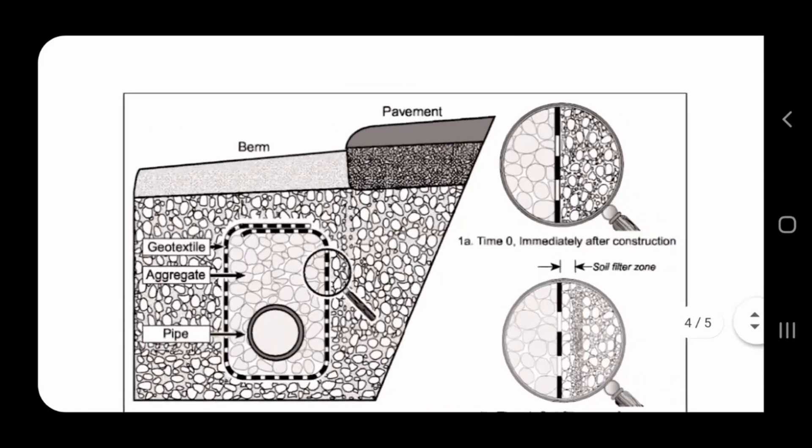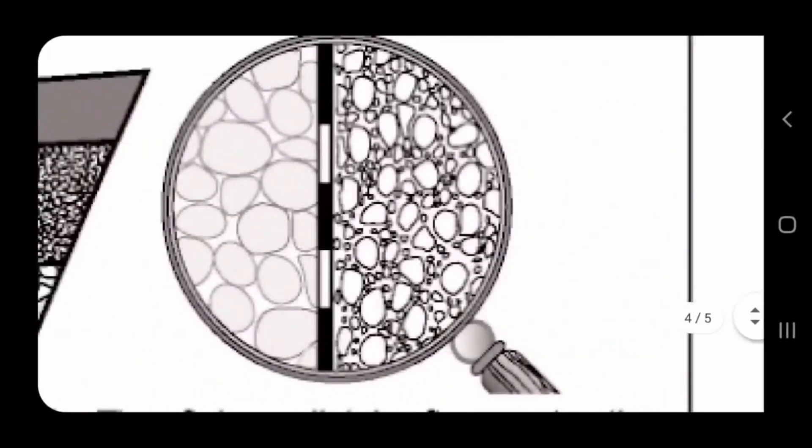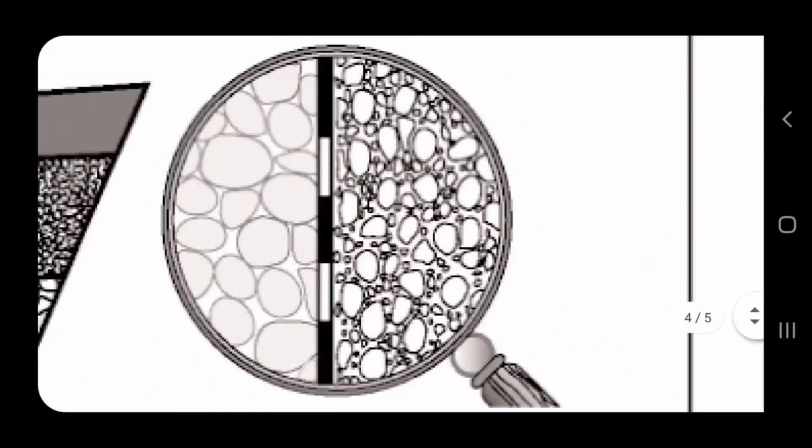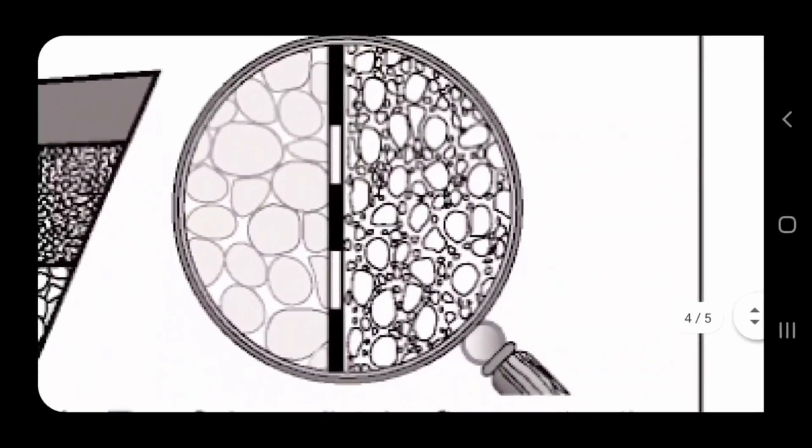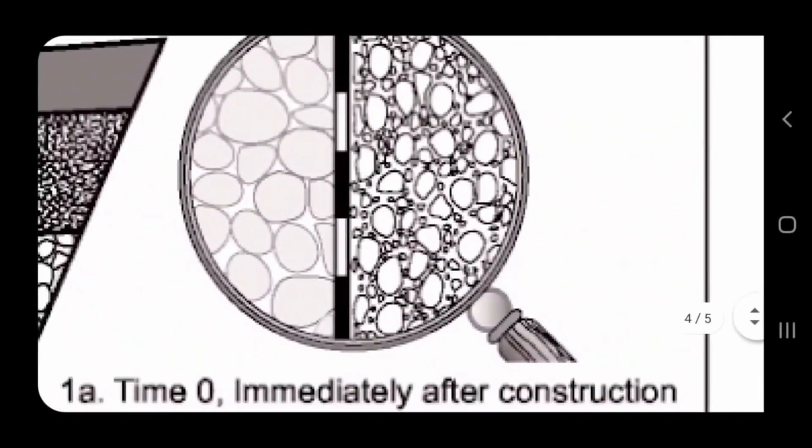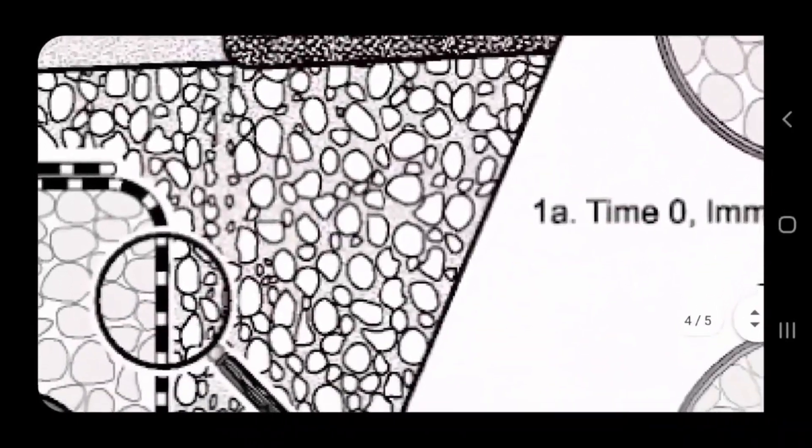They show a pipe and they show burrito wrap and then they show all the native soil. They got a magnifying glass and they're zooming in on the fabric. So you got your drainage stone on the left, you got in the middle of that magnifying glass the non-woven geotextile double punch fabric, and then you have your soil on the right side of that magnifying glass.